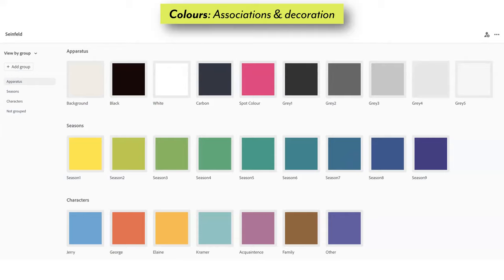The colours: a spot colour and carbon that I was inspired by earlier, forming the full apparatus for chart elements — legends, keys, grid lines, headings — quite neutral in nature apart from that spot colour to stand out. The seasons used a continuous yellow-through-green-through-blue-through-purple colour scheme to create a sense of ordinal continuity. The characters were given unique colours in a palette similar in style to what I saw in that New York Times piece — though not sufficiently colour-blind friendly, it didn't need to be because there were no moments when the colours would be alone.